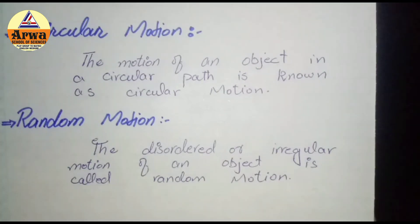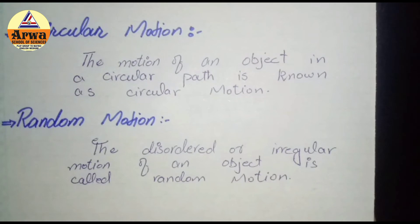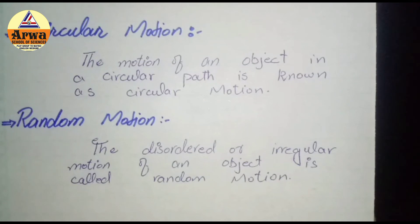Similarly, motion of the earth around the sun — Earth, Sun ke around ek circular path mein move kar rahi hai, to use bhi hum kahenge ki ye bhi circular motion hai. Aur motion of moon around earth — Moon bhi Earth ke around ek circular path mein move kar raha hai, to ise bhi hum kahenge ki ye bhi circular motion hai.